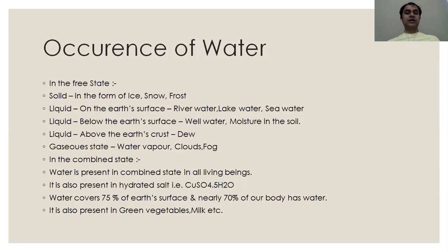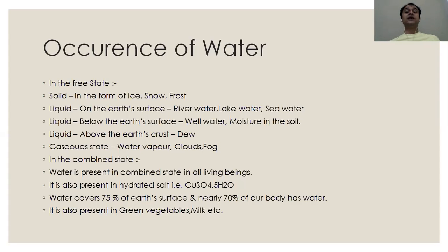Now in combined state — we have already learned water of crystallization, and that point is directly associated with this. Water in the combined state: if you take an example of hydrated copper sulfate, its formula is CuSO4·5H2O, meaning it has copper, sulfur, oxygen, and five molecules of water. So water in hydrated copper sulfate is present in a combined state — there is a loose combination between the water molecule and the copper sulfate salt. Water is also present in combined state in all living beings, and in hydrated salts like CuSO4·5H2O. Water covers 75% of the earth's surface, and 70% of water is present in our body. It is also present in green vegetables, milk, etc.